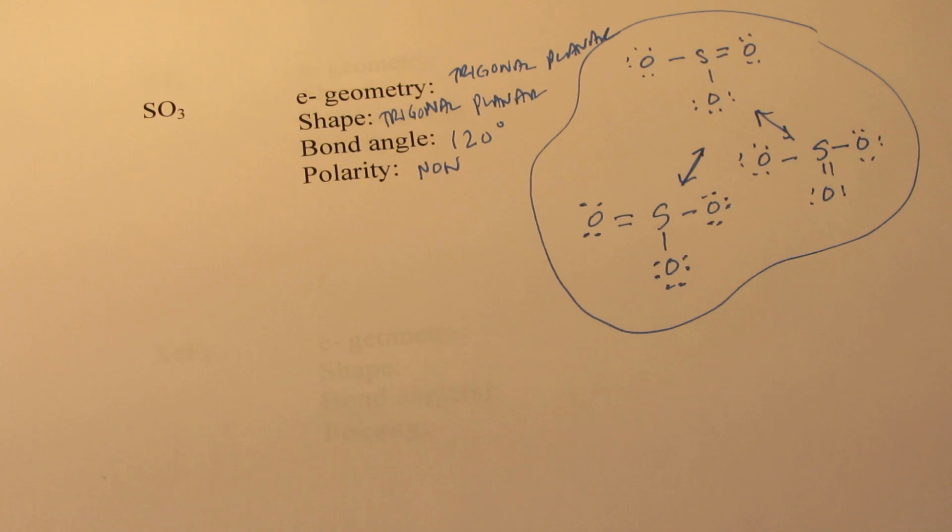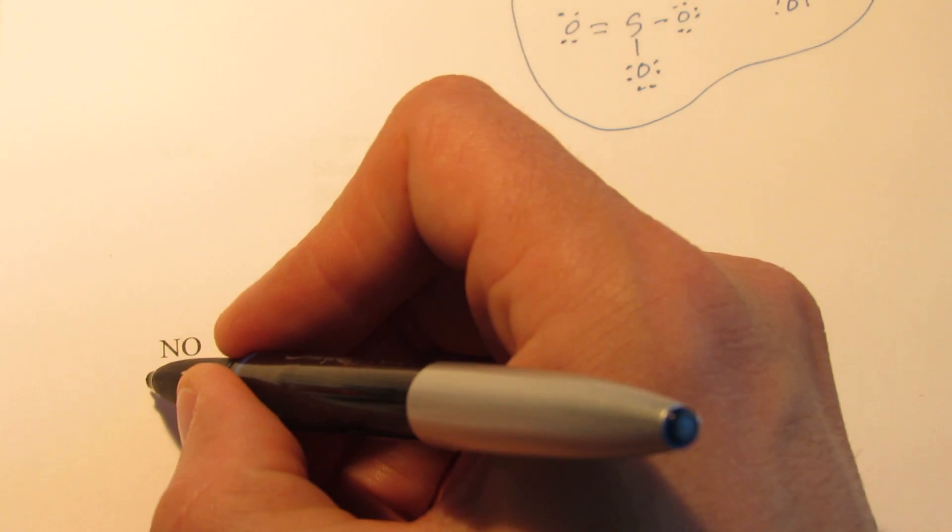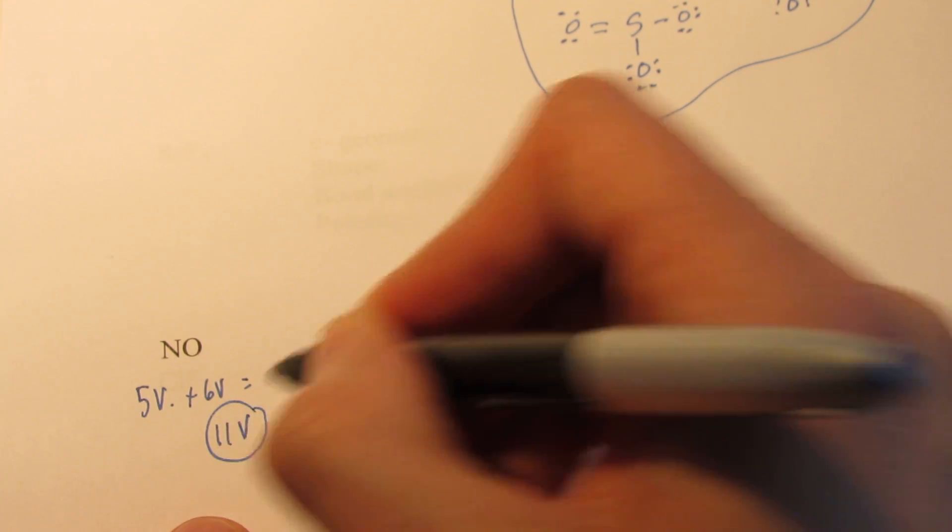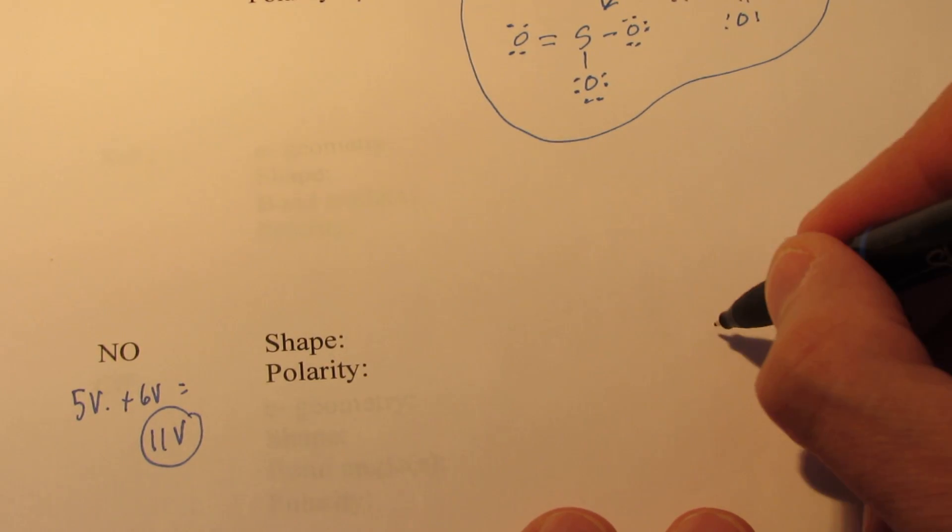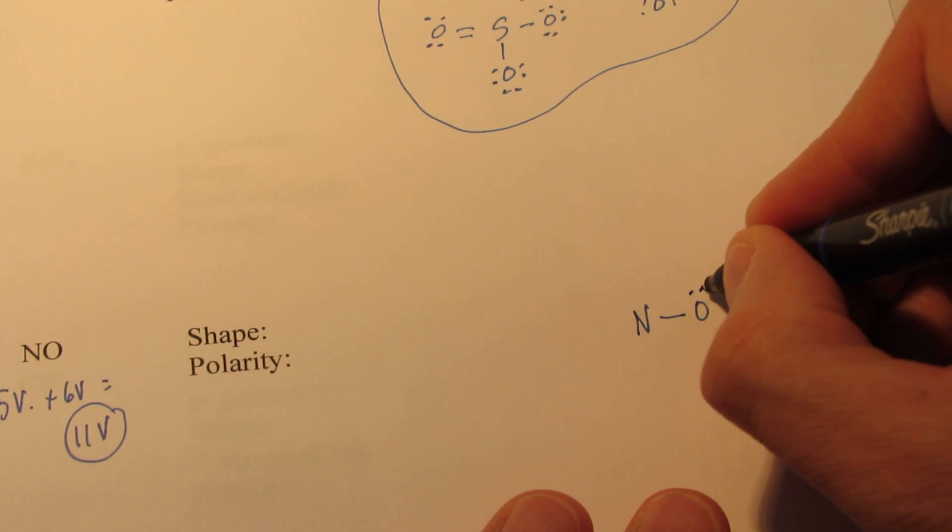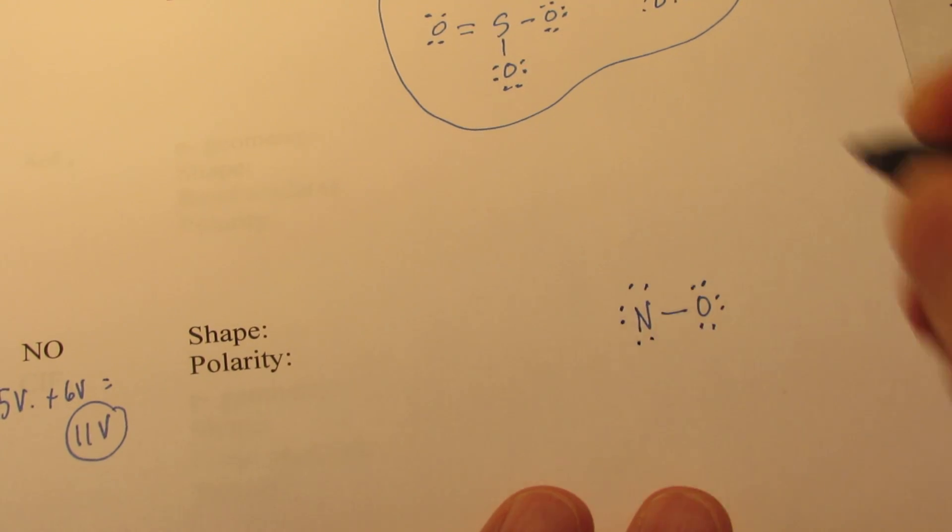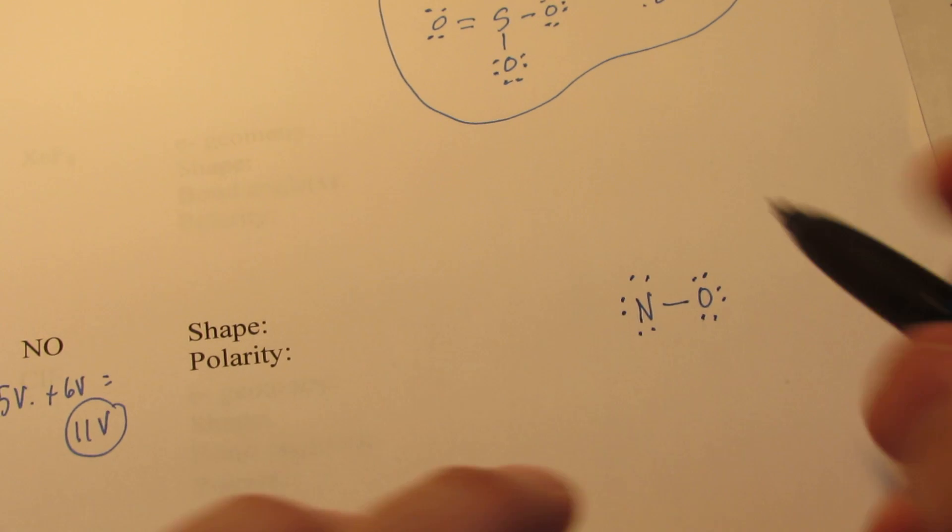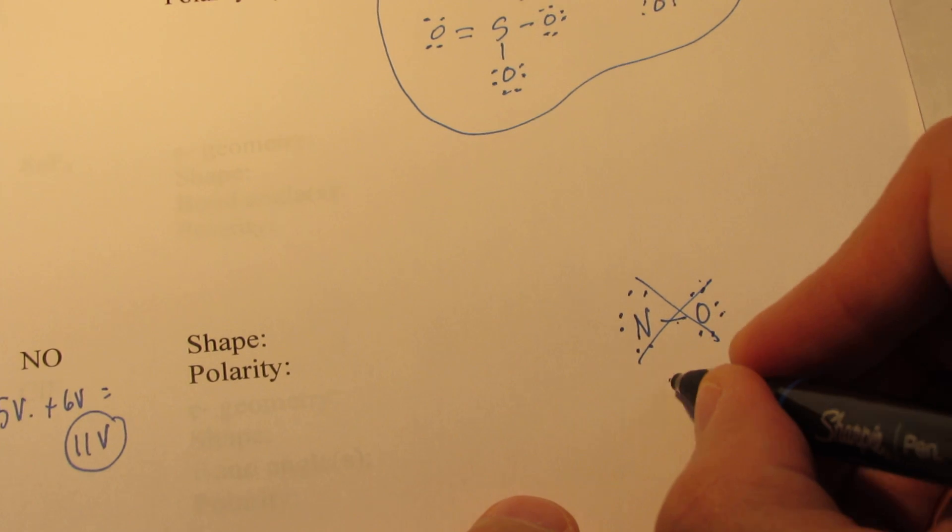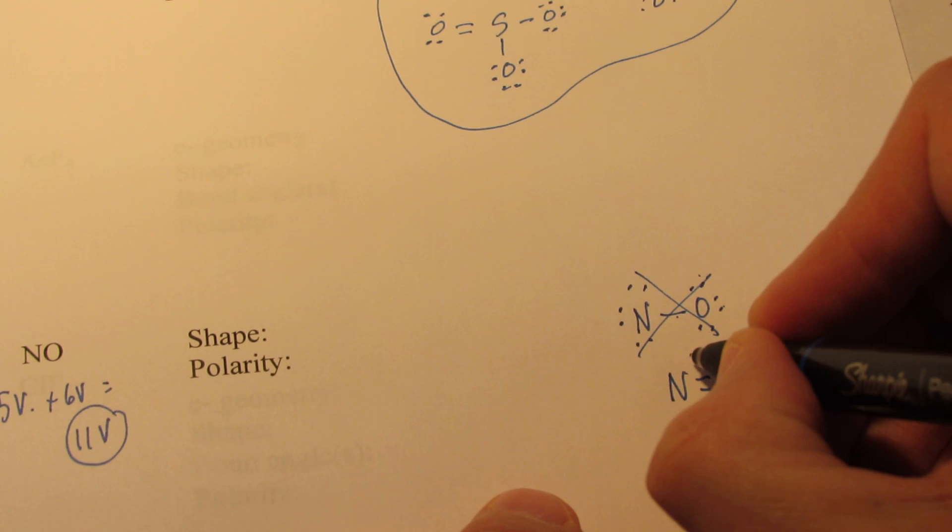Let's do NO next. And that is an interesting Lewis structure because we're going to end up with an odd number of electrons. See, nitrogen has five valence, oxygen has six. So that's a total of 11 valence. So obviously somebody is not going to have a full octet. Now we're going to belabor this just for a minute. We'll give a single bond between nitrogen and oxygen just to illustrate that you can't have a full octet here. We have 2, 4, 6, 8, 10, 12, 14. We're only allowed 11. So we'll try a double bond between nitrogen and oxygen. And once again, we'll try to give each atom a full octet.